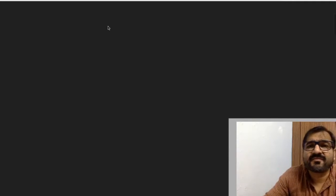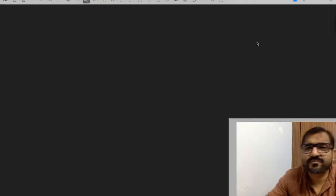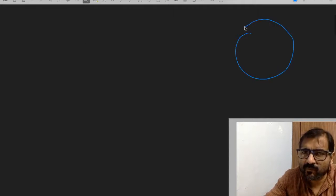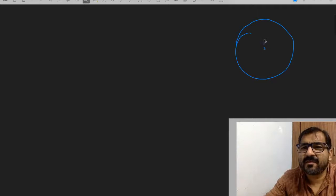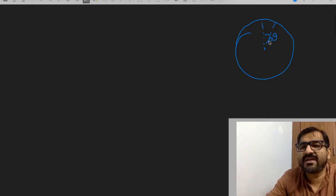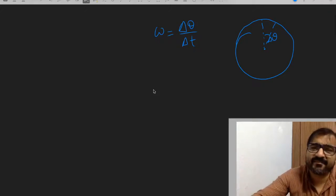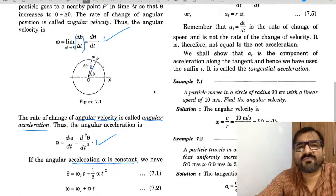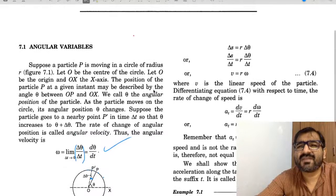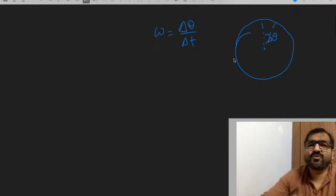Any particle moving in a circle - we were talking about its angle here. How much angle it rotated. So this angle rotated, delta theta, divided by delta t. This concept is not that difficult to understand.